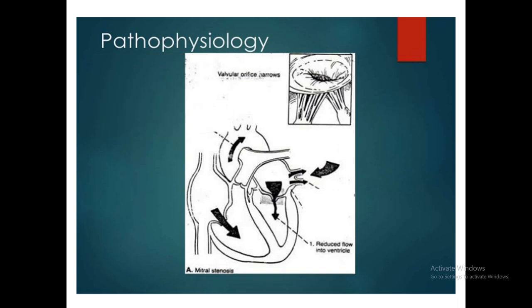For the pathophysiology: stenosis and fibrosis cause narrowing of the valve. Blood coming from the pulmonary veins into the left atrium will stay there. The amount of blood passing through the valve into the left ventricle will be lower. The end-diastolic volume of the left ventricle becomes lower and lower, so stroke volume will be lower and symptoms appear. The whole body is affected by the reduced stroke volume.